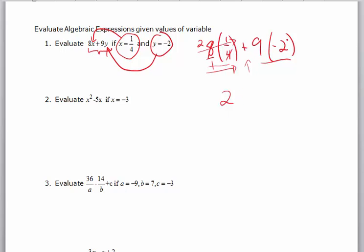You have a positive 9 times a negative 2, that's negative 18. Some people write this as 2 plus negative 18 — they're the same thing, however you prefer. Basically I'm adding a negative 18 to 2, or subtracting 18 from 2 — either way you should get negative 16.